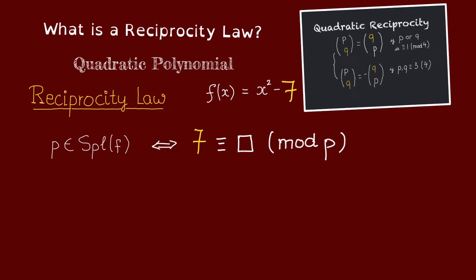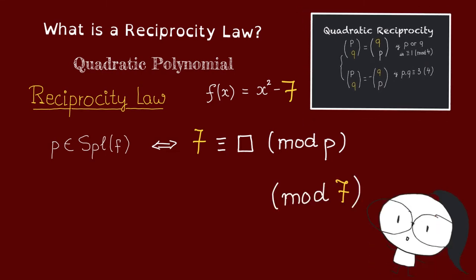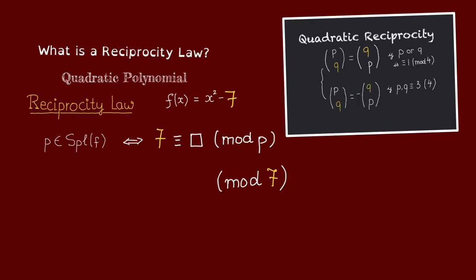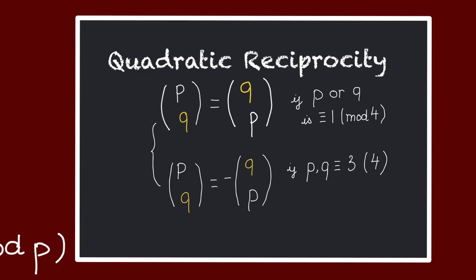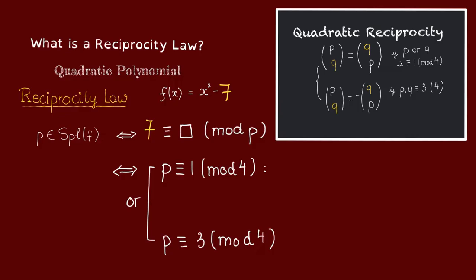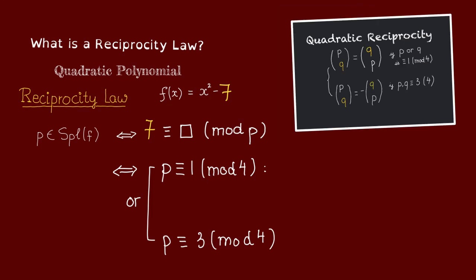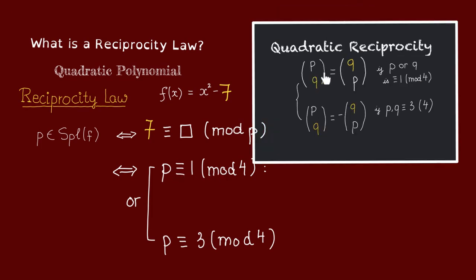Now we want to use quadratic reciprocity to switch this to a condition modulo 7. This now is a little bit more complicated because we also need to know residue of p modulo 4. So let's break it down into two cases. When p is congruent to 1 mod 4, then by quadratic reciprocity, p is a square mod q if and only if q is a square mod p.